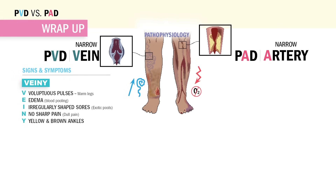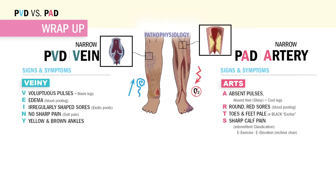For PAD, the artery problem, think ARTS for artery. A for absence of pulses and hairless legs — also cold legs. T for toes and feet that are pale or black, called eschar. And S, which is our biggest NCLEX tip here: sharp pain from exercise and elevation, like in a recliner chair.